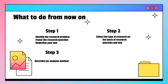Now let us move on to the fourth step: we need to evaluate and justify the methodological choices we have made. This part is very important. We need to justify why we selected the quantitative or qualitative approach for this type of research, and accordingly we write this section.